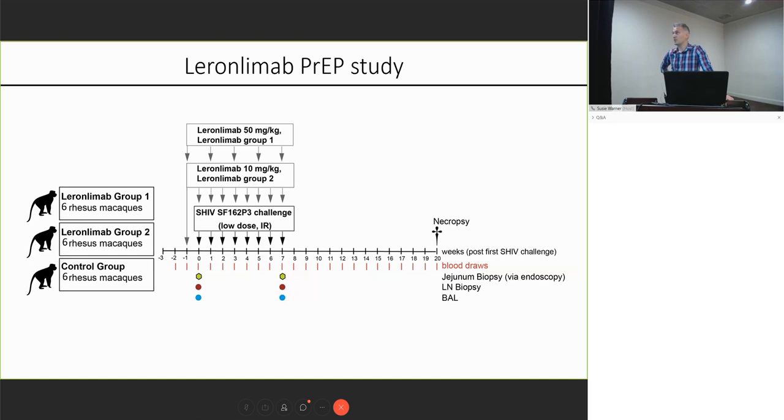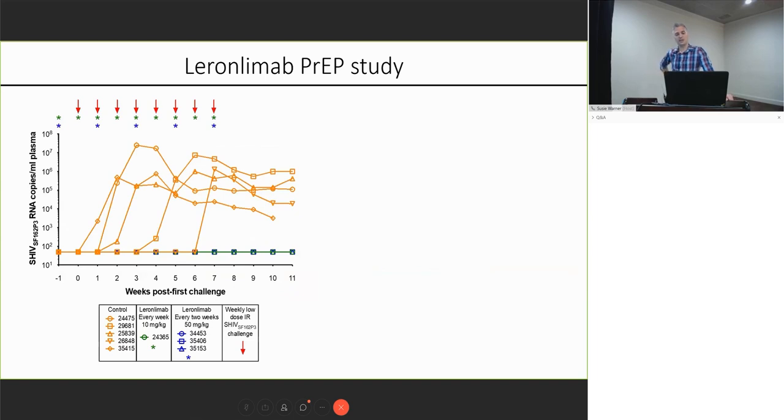So we took three groups of animals: controls. One group received leronlimab at the higher dose every two weeks, and one group received the 10 mg per kg every week. This is the dose that's in clinical trials right now. And then we did low-dose SHIV SF162P3 challenges intrarectally. And this is very much a work in progress, but I wanted to show it because I think it's quite exciting. What we can see is that we don't have all the animals through this yet. We only have four leronlimab-treated animals versus five controls. But the long and short of it is that if you look after eight low-dose weekly SHIV SF162P3 challenges shown by those red arrows, all of the controls get infected and zero of the leronlimab-treated animals get infected.